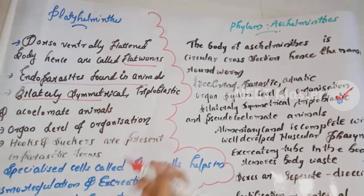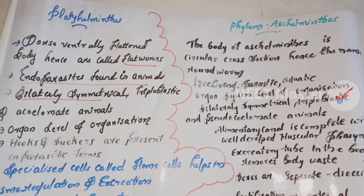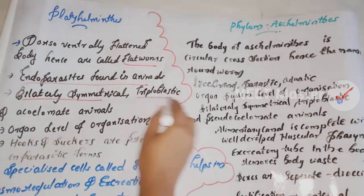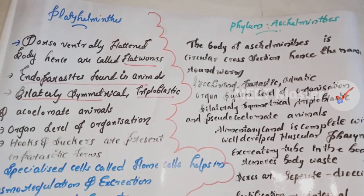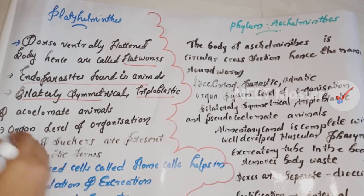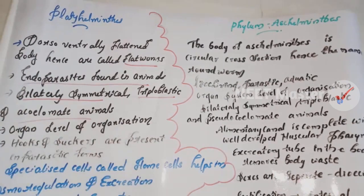Bilaterally symmetrical means the plane divides the body into right and left halves. Triploblastic means having three germ layers including the mesoderm, which is an undifferentiated middle layer. Acoelomate means there is no true body cavity.